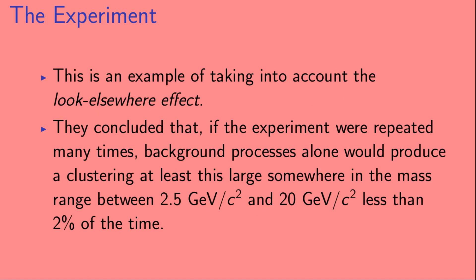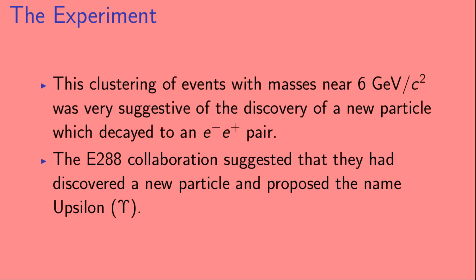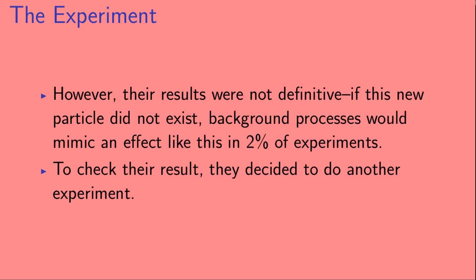This is an example of taking into account the look-elsewhere effect. They concluded that if the experiment were repeated many times, background processes alone would produce a clustering at least this large somewhere in the mass range between 2.5 and 20 GeV/c² less than 2% of the time. This clustering near 6 GeV/c² was very suggestive of a new particle decaying into an electron-positron pair. The E288 collaboration proposed the name 'epsilon' for it. However, their results were not definitive — background processes would mimic an effect like this in 2% of experiments, so they decided to do another experiment.